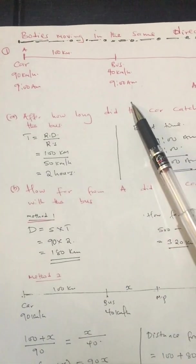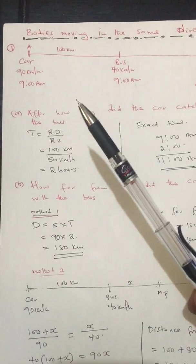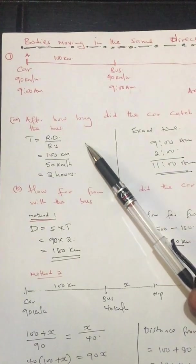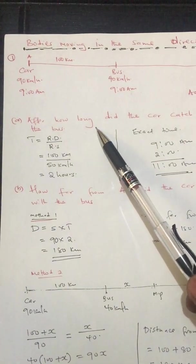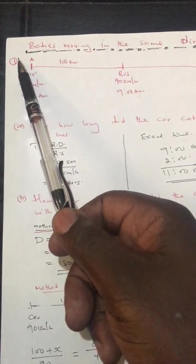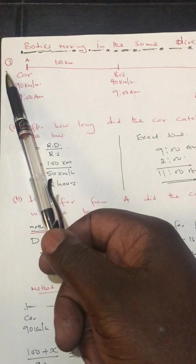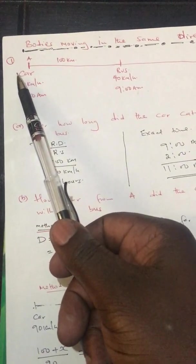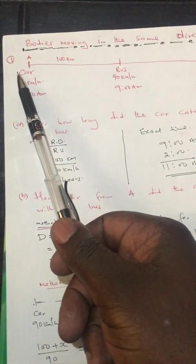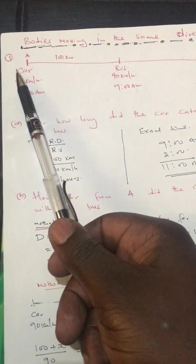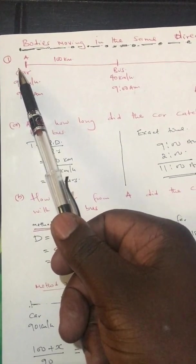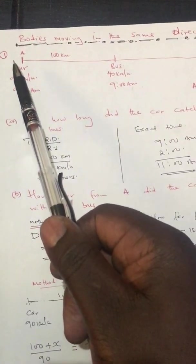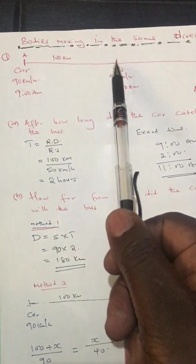I have two examples to use for today's lesson, so listen carefully and it will be of help. For the first question, I don't write the question — I draw a sketch then read the question from the sketch. So the first question: I have two bodies here, a car and a bus.